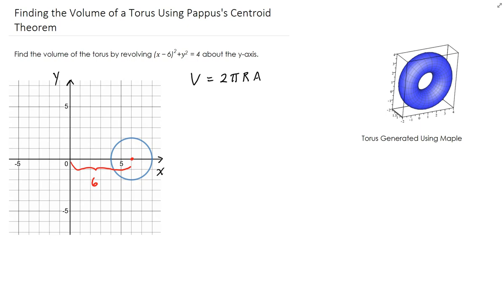Now, we need to figure out the area of this circle, and we already know how to do that. The area for this is just pi R squared. The radius of the circle is going to be 2 because we have here x minus 6 squared plus y squared equals 4. So that tells you the radius of the circle is going to be 2.